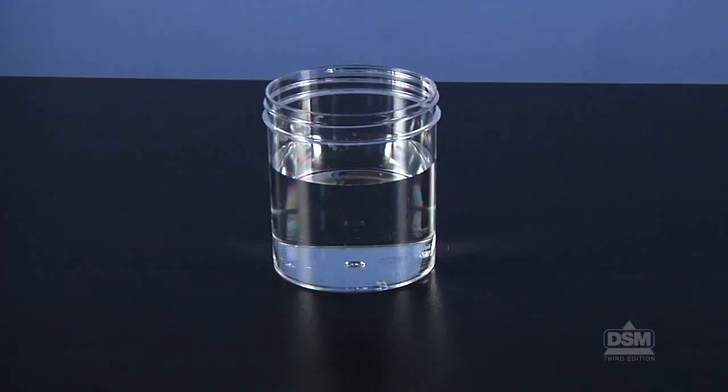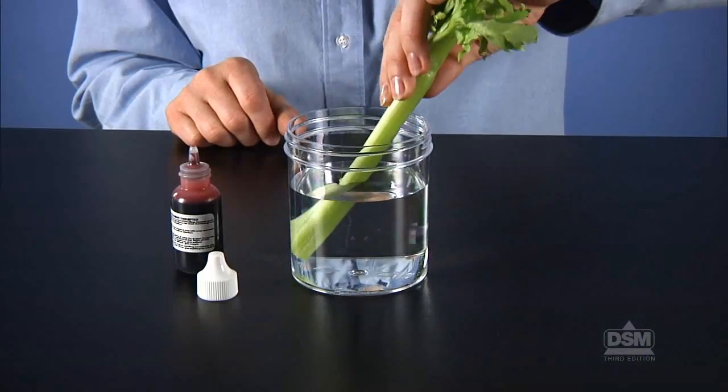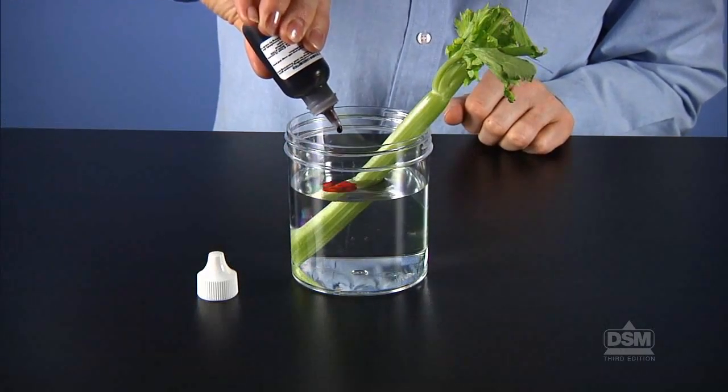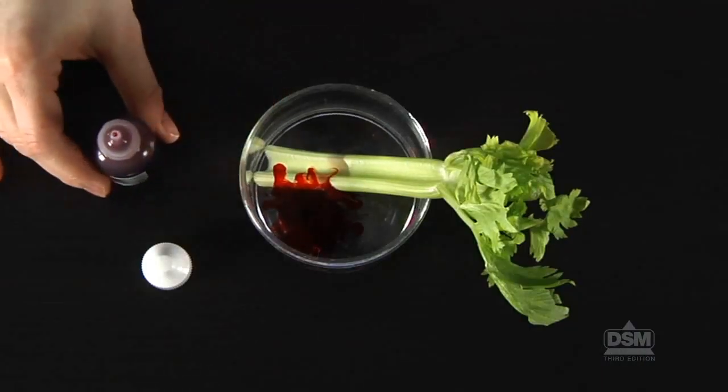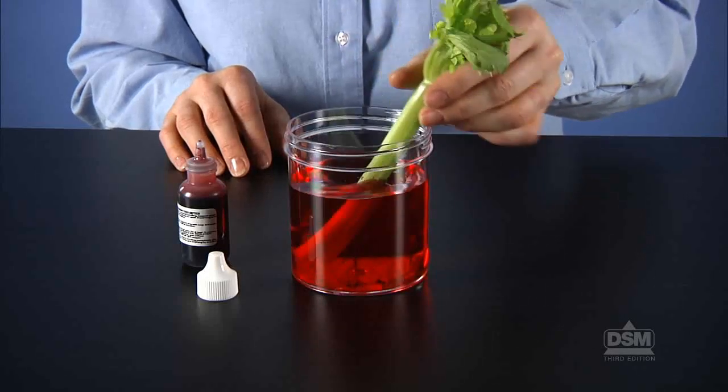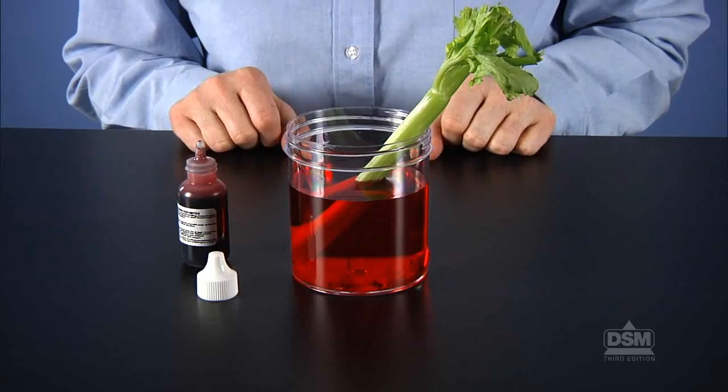Distribute a jar of water to each team. Have students place the celery stalk in the jar of water with the cut end down and add about six drops of red food coloring to each jar. Students should stir the water with the celery stalk, then place the jar on a sunny windowsill. Encourage students to think about what will happen to the celery. Some students may guess that the celery stalk will turn red. Accept all answers.